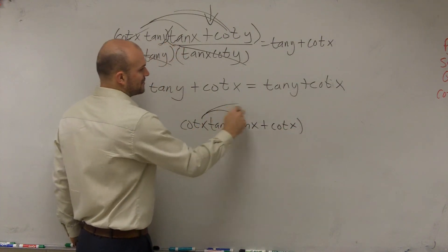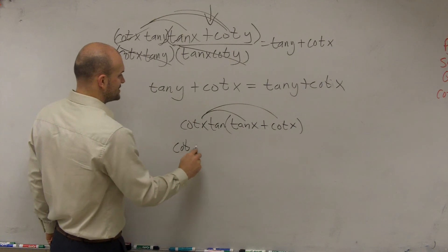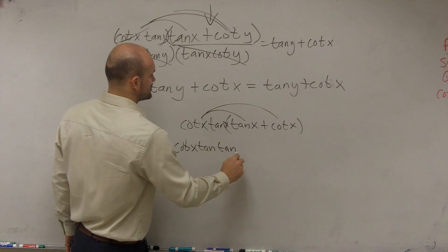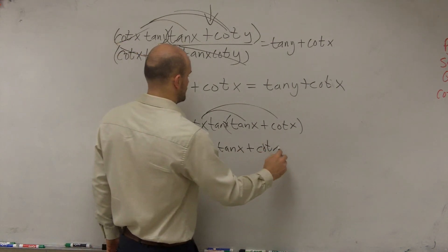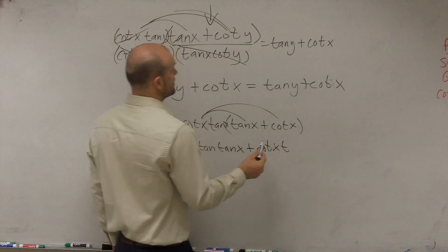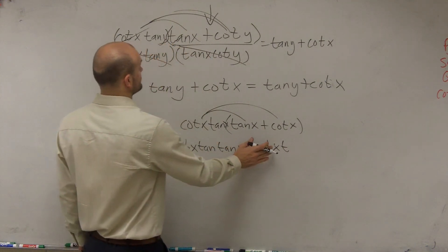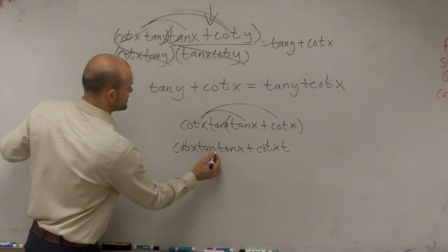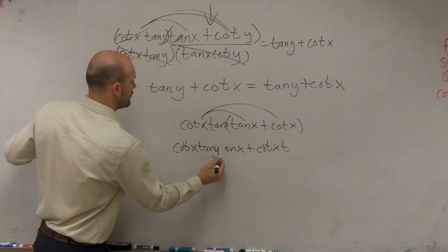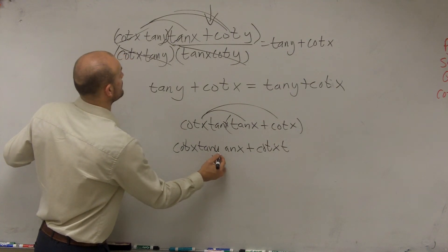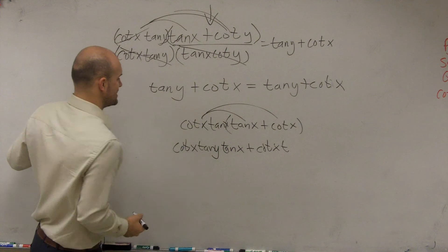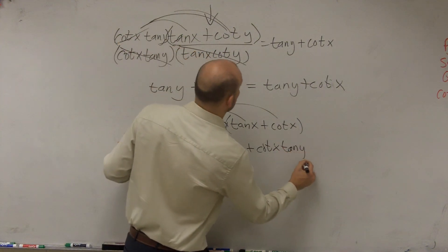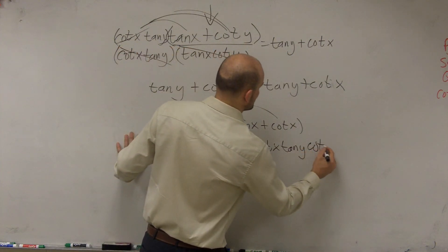You understand distributive property, right? Got to go to both of them. So therefore, I have cotangent of x, tangent of x, times tangent of x, plus cotangent of x, oh, I'm sorry, that's cotangent of y. Sorry, cotangent of x, tangent of y, times tangent of x, plus cotangent of x, tangent of y, times cotangent of y.